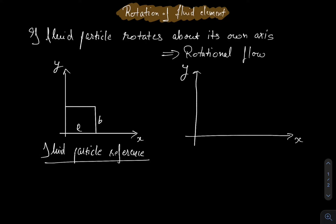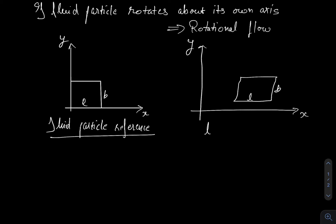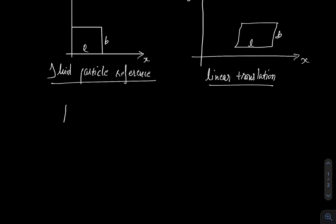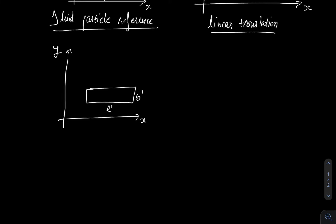One possible case is that this particle can translate, having the same length and breadth l and b — this is linear translation of the fluid particle. Another case is that this particle can deform linearly: the new length becomes l-dash and the new breadth becomes b-dash, so the particle has deformed linearly. This is called linear deformation.